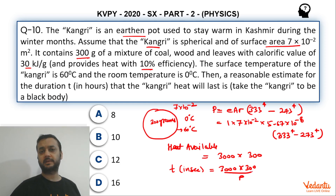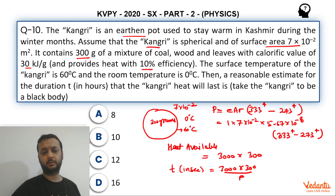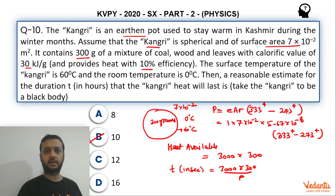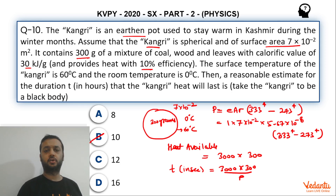Once you convert the result into hours, the closest option is Option B, which is 10 hours. As you can see, this question only involved calculations, and since you have calculators it should not have been much of a problem. That's it, thank you.